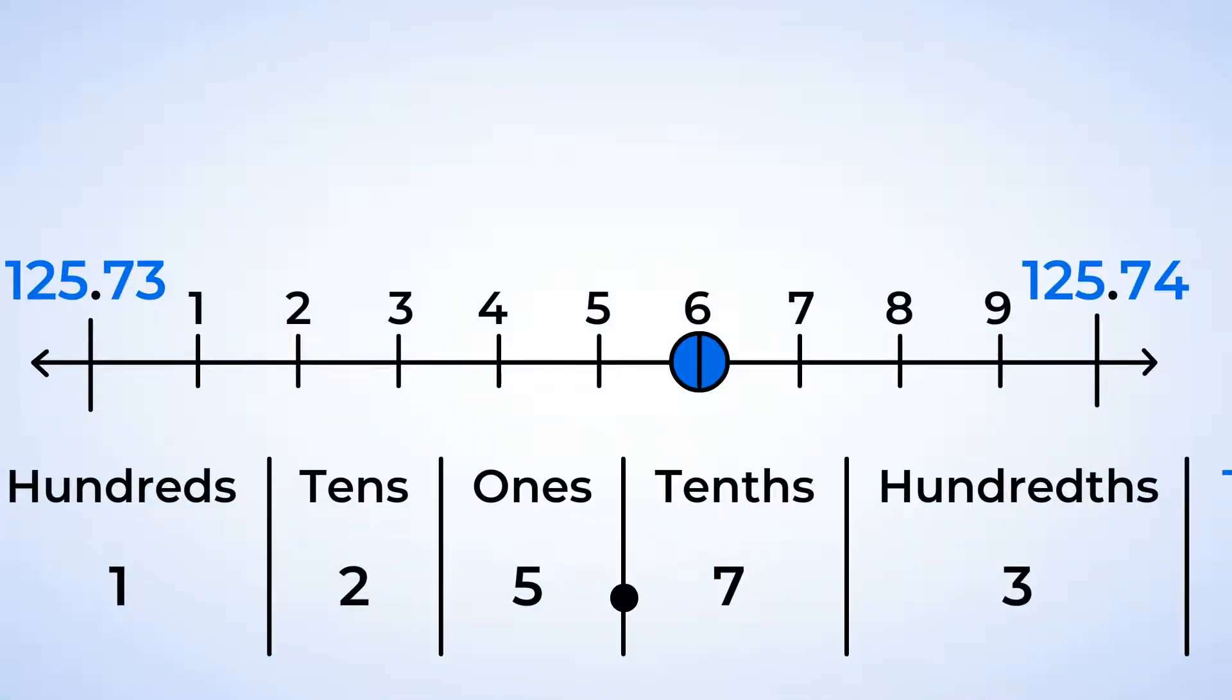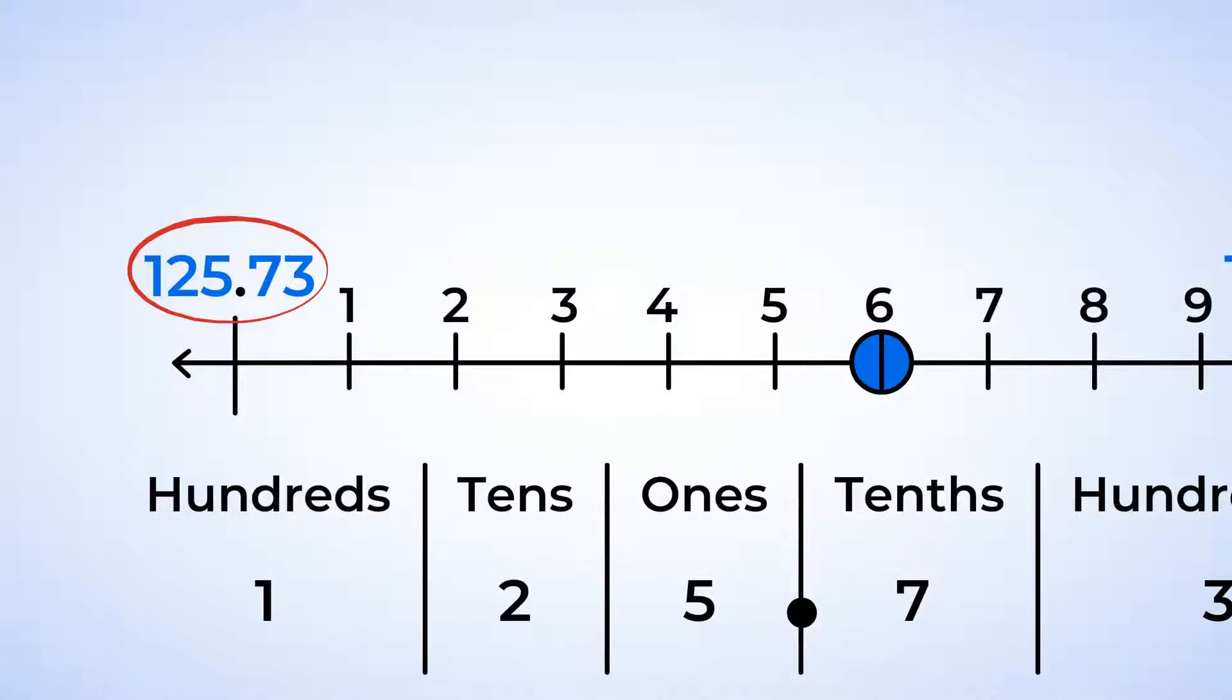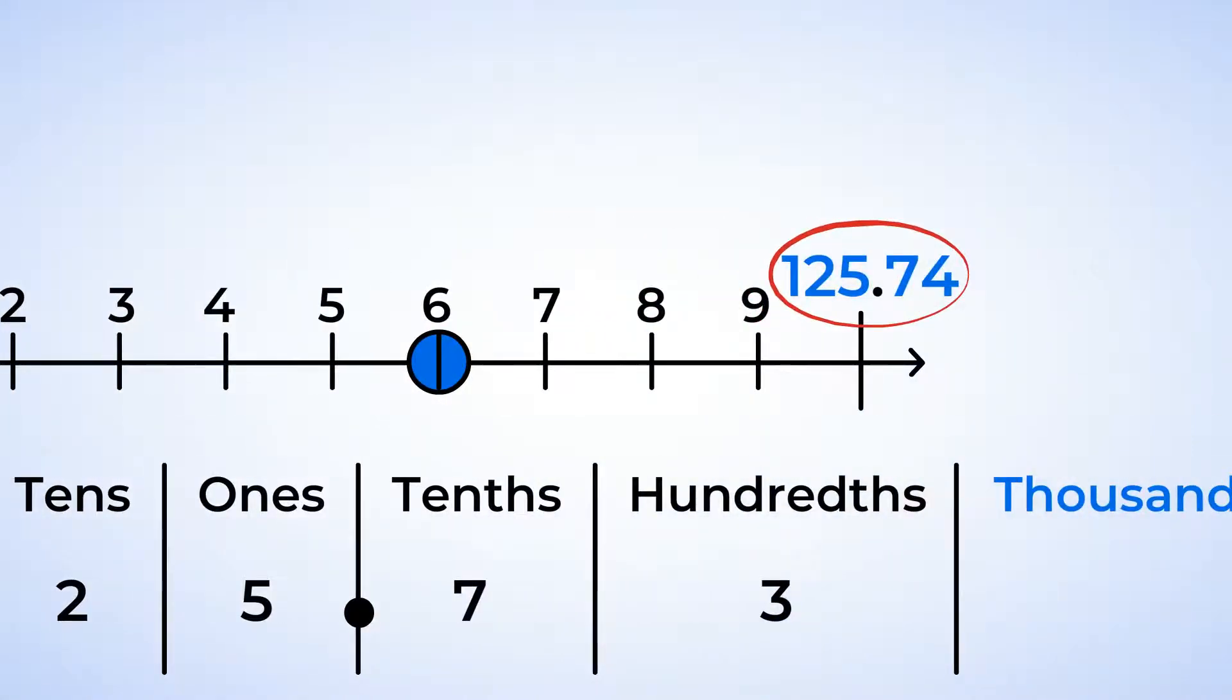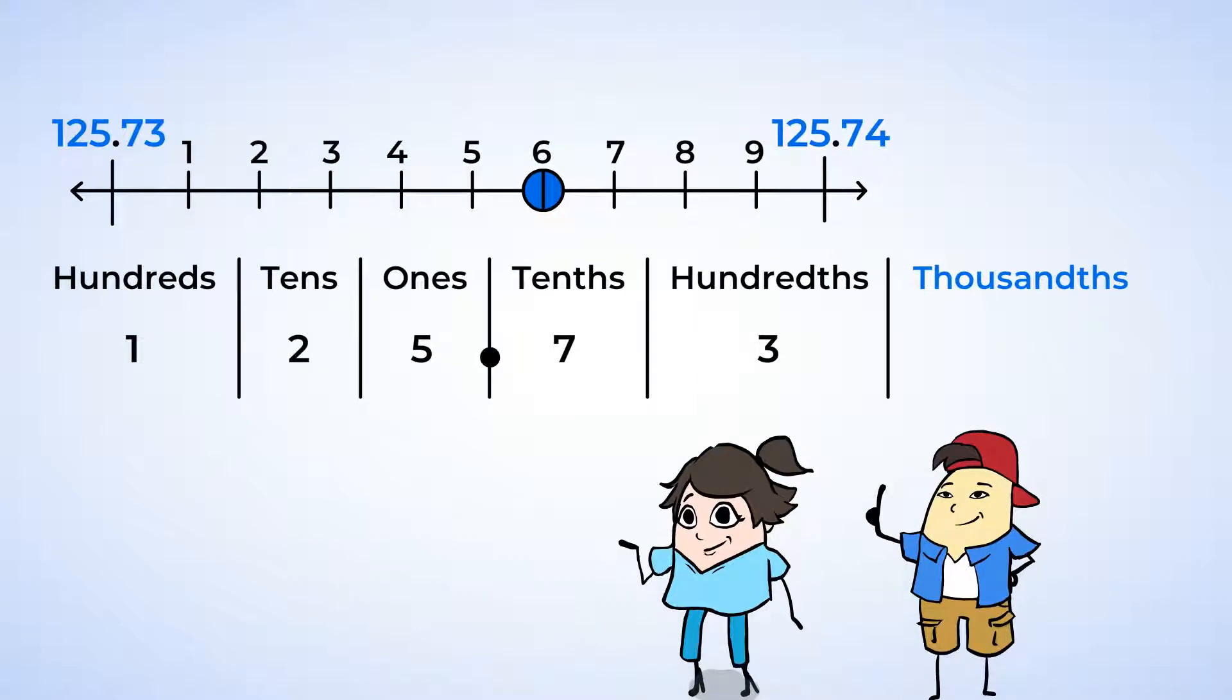Okay, so now we're looking in between 125.73 and 125.74, and the number is at the six thousandths mark. Aha! We've found the number 125 and 736 thousandths. Cool. When we read a number that contains a decimal point, the point is read as AND.